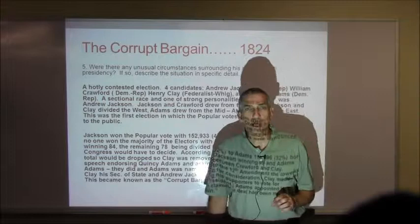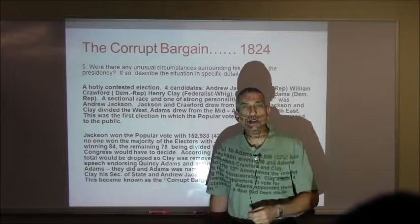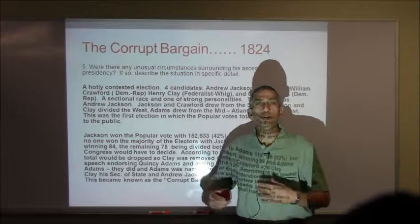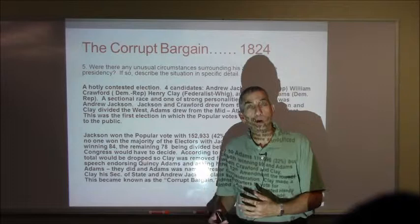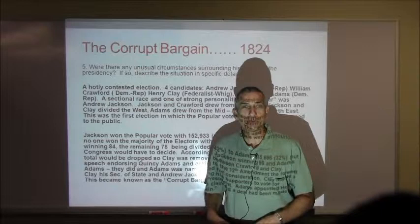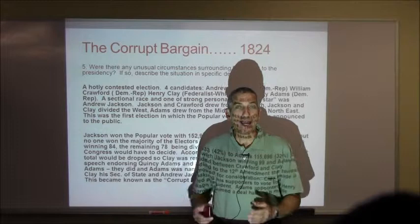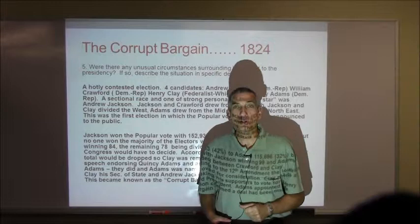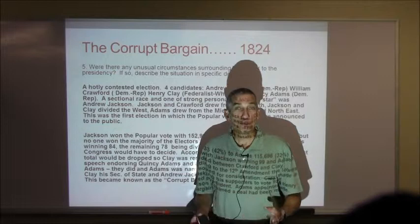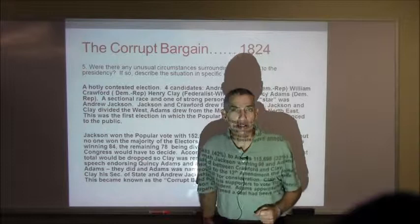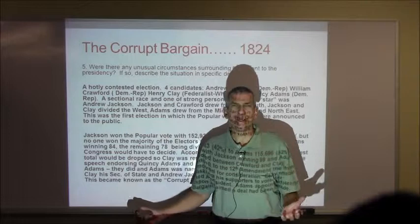We end up in the House of Representatives, which comes down to a battle between Quincy Adams and Andrew Jackson. Henry Clay had already dropped out because he had the fewest popular votes. Henry Clay then makes a huge bellicose speech in the House asking his supporters to support Quincy Adams — and sure enough, they do. The House of Representatives gives the presidency to Quincy Adams, in spite of the fact that Andrew Jackson had more popular votes and more electoral votes going into that debate.